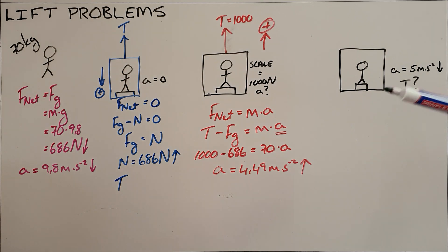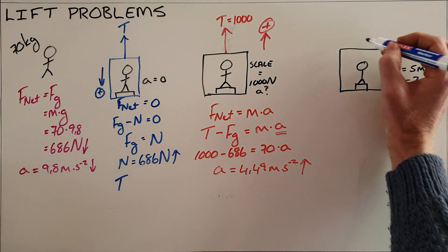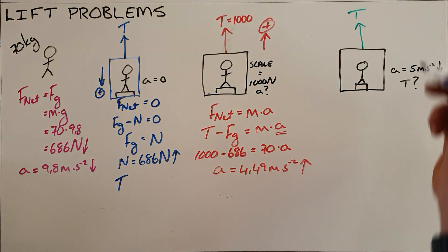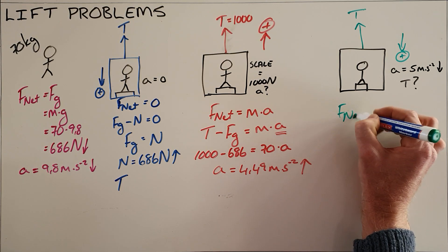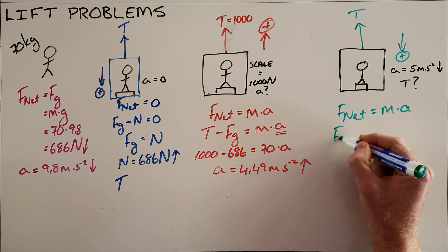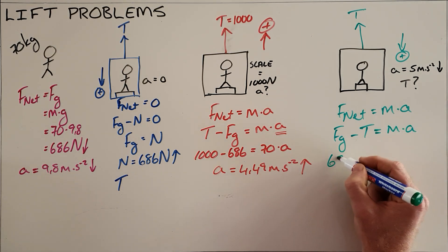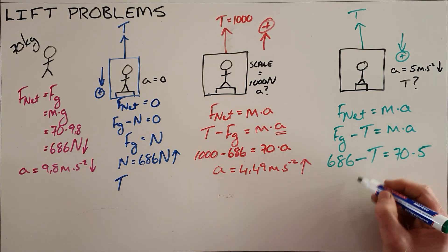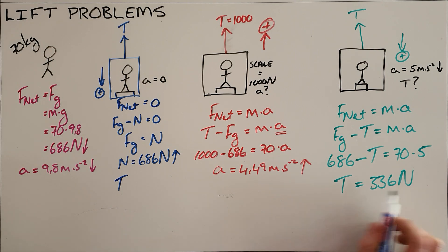The other scenario is when the man is in a lift accelerating downward at 5 meters per second squared. Since he is not accelerating at 9.8 m/s², there must still be some upward force, just not strong enough to overcome gravity. Choosing downward as positive, the net force is gravity minus tension equals mass times acceleration: 686 − T = 70 × 5. Solving gives a tension of 336 Newtons, which is also the scale reading the man sees while the lift accelerates downward.